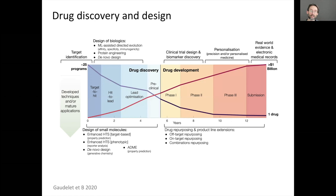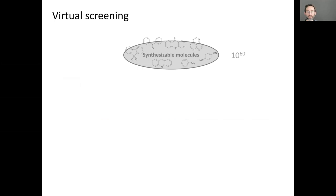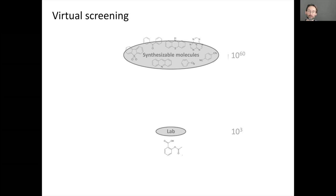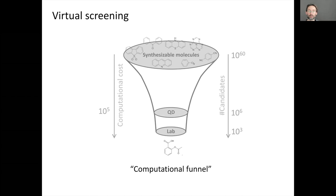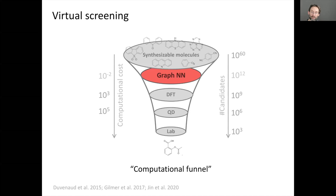Drug discovery is another important use case. The challenge is that the number of testable compounds is tiny compared to the candidate space. Traditional methods use quantum mechanical simulations. Graph neural networks were shown to be orders of magnitude faster at the same accuracy — established in work by Justin Gilmer at Google in 2017.